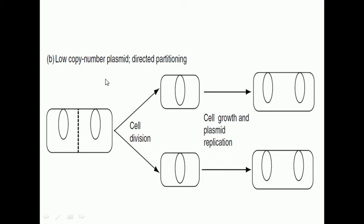For example, in this picture it is denoted that only one plasmid is allowed inside the bacterial cell.